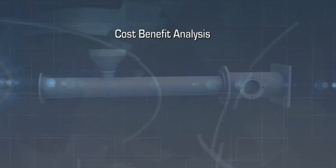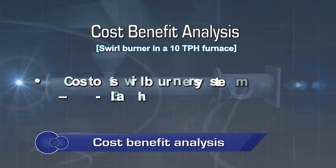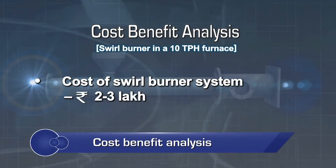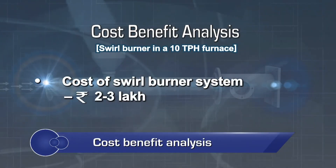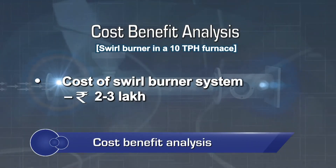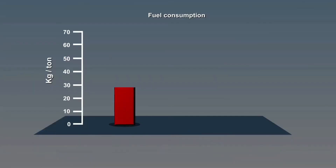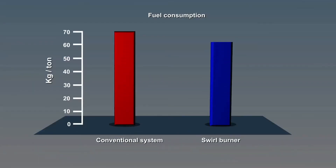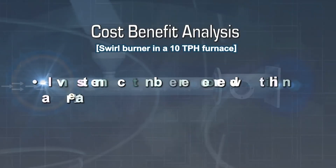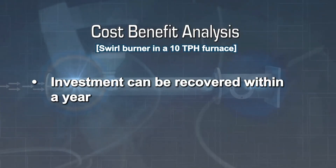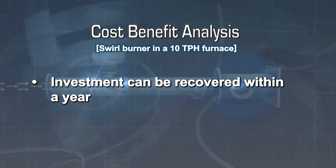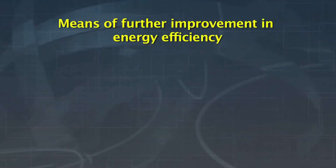The swirl burner system installed in a 10 TPH furnace can cost around 2 to 3 lakh rupees, resulting in a reduction in specific fuel consumption by 2 to 3% from the conventional system. Thus the investment made can be recovered within less than a year.